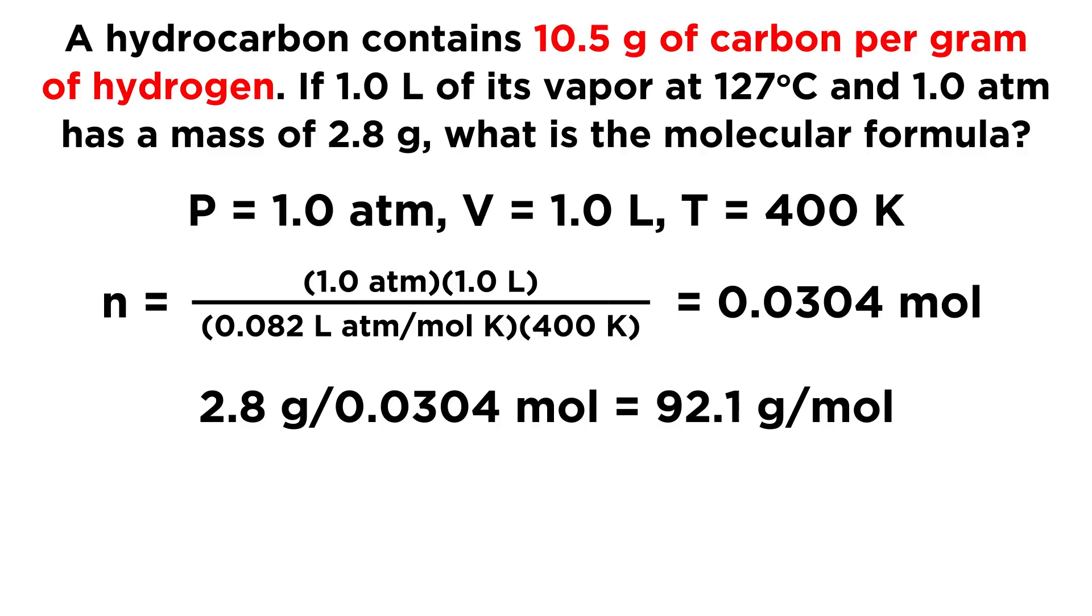Now let's take this other information. We have a ratio. We know that we have 10.5 grams of carbon for every gram of hydrogen. So we're going to change this into moles, because we want to know the empirical formula. We want to know the ratio of carbon atoms to hydrogen atoms in the molecule. Let's take 10.5 grams of carbon and multiply by 1 mole carbon over 12 grams of carbon. That's the molar mass of carbon. So we convert that into 0.875 moles of carbon.